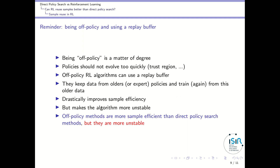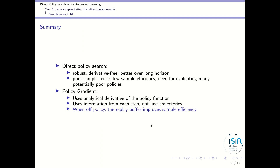However, using a replay buffer makes the algorithm unstable because you may use samples too far from your trust region. To summarize all points from these five videos: direct policy search methods are robust, derivative-free, and better over longer horizons, but they have poor sample reuse and low sample efficiency, requiring evaluation of many potentially poor policies. By contrast, policy gradient methods can use an analytical derivative, exploit information from each step rather than just trajectories, and when off-policy can use a replay buffer that greatly improves sample efficiency. Thank you for listening.